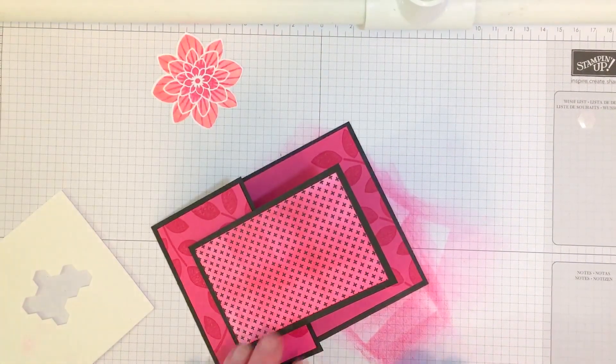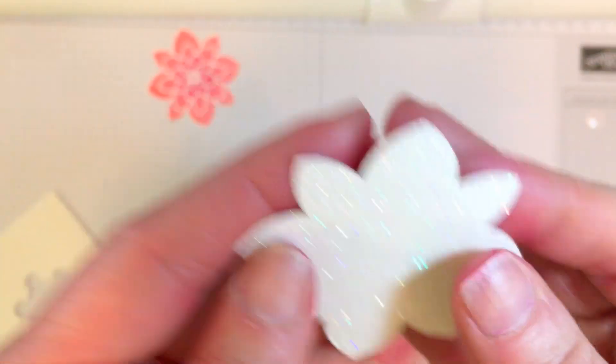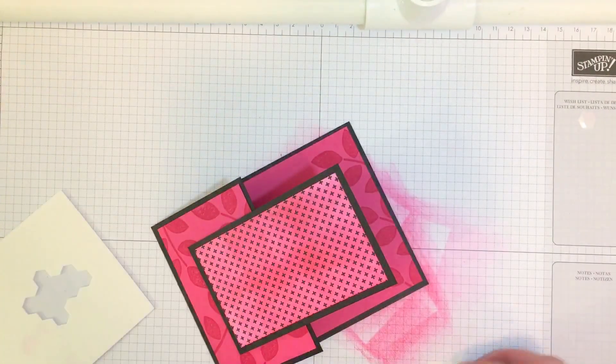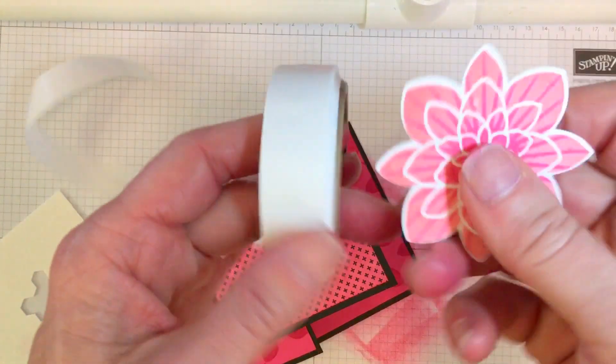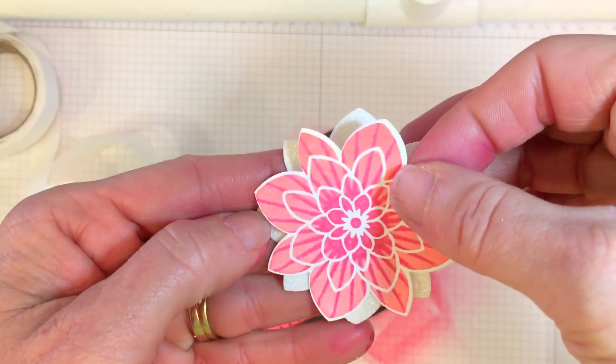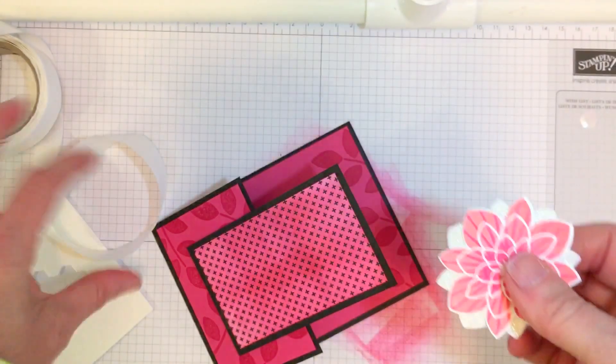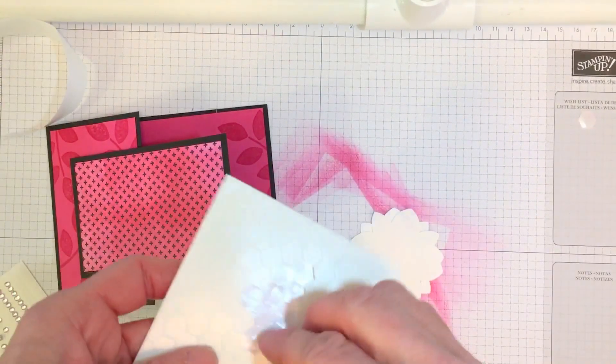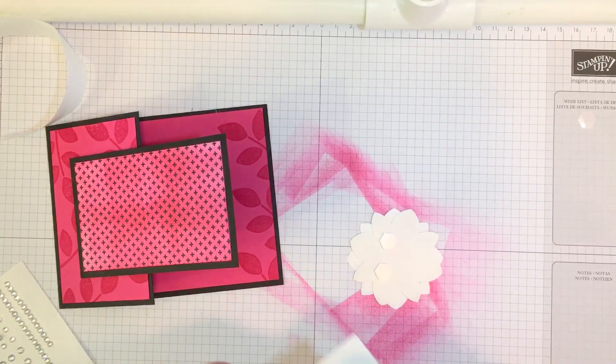So, now, I already punched out from the Dazzling Diamonds glimmer paper, and I'm going to grab my glue dots, and I'm going to put my medallion on with some glue dots. Perfect.